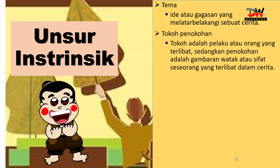Yang kedua ada tokoh dan penokohan. Tokoh adalah pelaku atau orang yang terlibat dalam cerita. Sedangkan penokohan adalah gambaran watak atau sifat seseorang yang terlibat dalam cerita. Terdapat empat jenis tokoh dalam cerpen: yang pertama protagonis, kedua antagonis, ketiga tritagonis, dan keempat figuran.